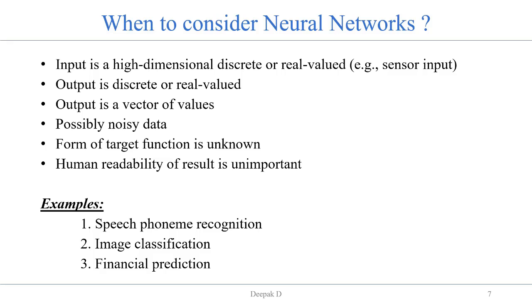When you want to have an output which is discrete or real valued output, and sometimes when you want an output which is a vector of values. When you have input data which is noisy data, and sometimes the target function is not known and human readability of result is unimportant. These are some of the reasons why we need to consider neural networks.